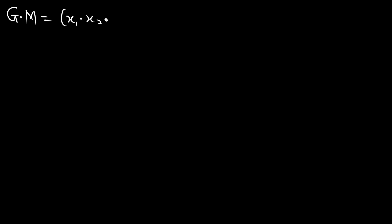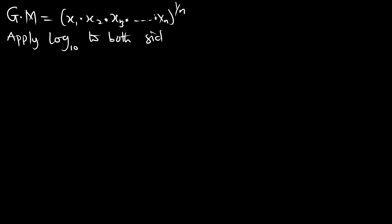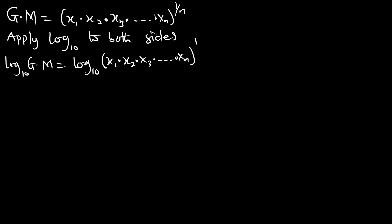From the same formula, we know that GM equals x1 multiplying x2 multiplying x3 up to xn, all raised to the power 1 over n. We now apply log base 10 to both sides. This gives us: log base 10 of GM equals log base 10 of (x1 × x2 × x3 × ... × xn) raised to the power 1 over n.